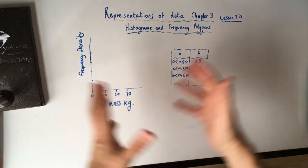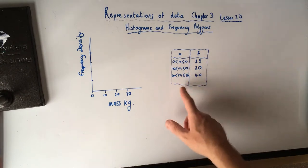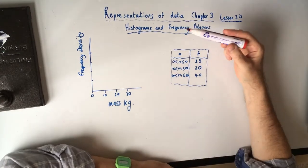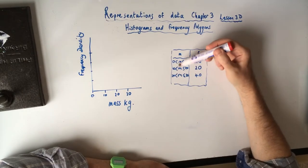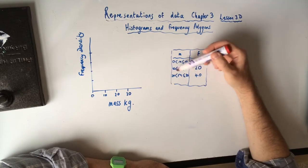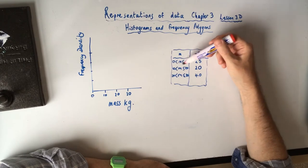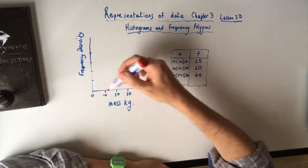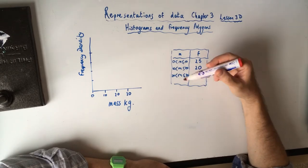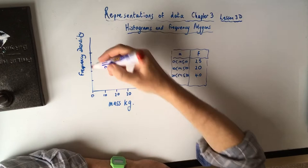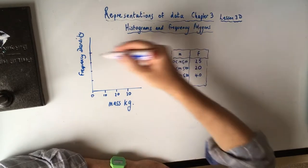I've made up some data here - some apples again with their mass and frequency. So we're going to draw a posh bar chart of this. The class widths here - 0 to 10, 10 to 20, 20 to 30 - are all the same, but with histograms that's often not the case. They don't have to be the same. The main difference is that the y-axis scale is the frequency density, not the frequency.